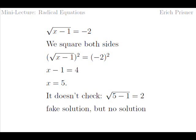So we have a fake solution here. Whenever you square both sides of an equation, you always have to check whether the solution you eventually get of the repeatedly transformed equation is also a solution of the initial equation. If not, we call it a fake solution.